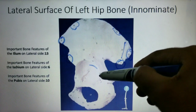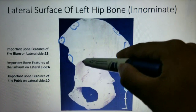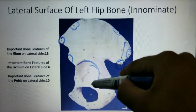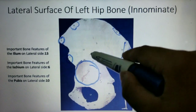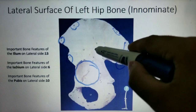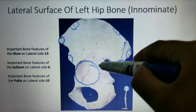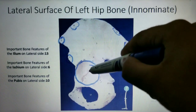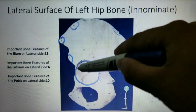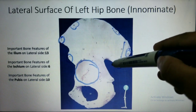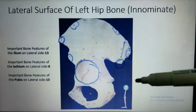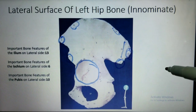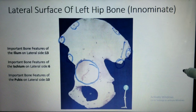Number 26 is the rim of acetabulum. This part is known as the acetabulum, and this is the rim of acetabulum. Now we will move towards the ischium. The ischium contains about six bone features to learn.